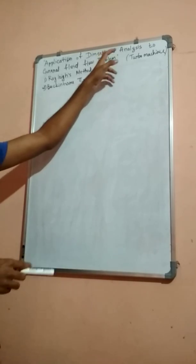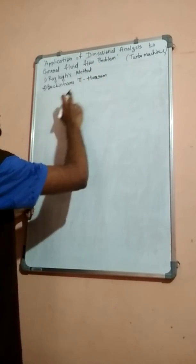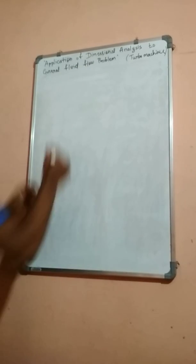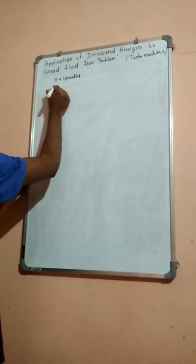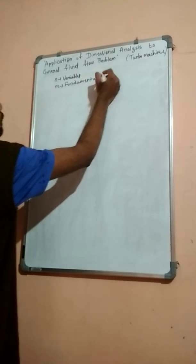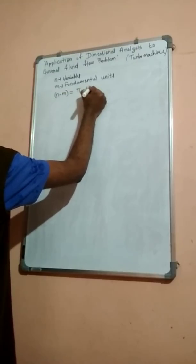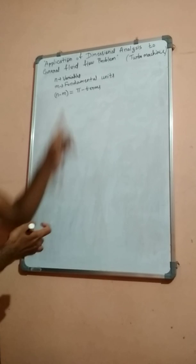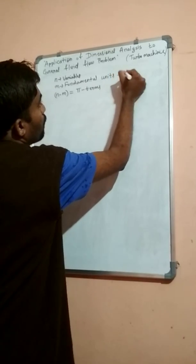We have two methods in Dimensional Analysis: Rayleigh's method and Buckingham's Pi theorem. As the number of variables increases in Rayleigh's method, it becomes very difficult. So we will consider Buckingham's Pi theorem. As per Buckingham's Pi theorem, if there are n variables in your problem which has m fundamental units, then we can obtain n minus m number of Pi terms.